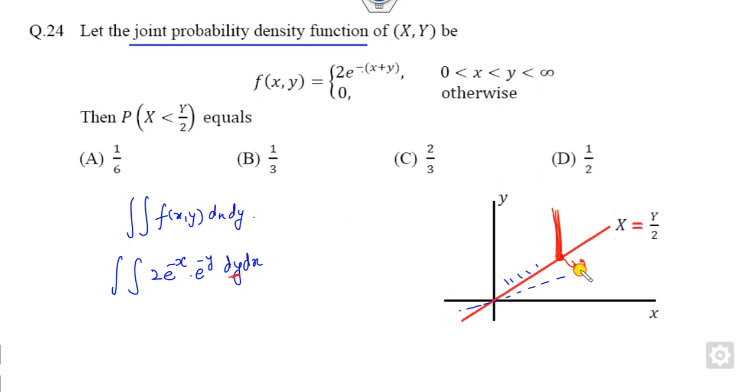What is the value of y here is 2x and what is the maximum value is infinity. So the limit is 2x to infinity, and what is the minimum value of x here is 0 and maximum value of x is infinity.